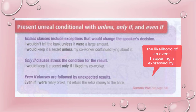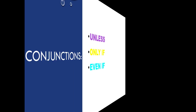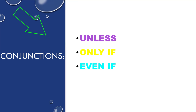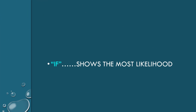The likelihood of an event in the main clause happening is expressed by the conjunctions unless, only if, and even if. These conjunctions are used in the conditional clause. 'If' shows the most likelihood.